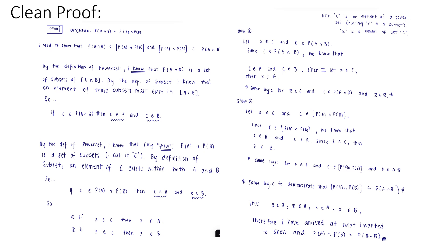I then do the same thing to show my second point, where I let Z exist within C and C exists within the power set of A intersect the power set of B. Since C exists within the power set of A intersect the power set of B, I know that C exists within A and C exists within B. Since Z exists within C, then Z also exists within B. I use that same logic for an element X existing within C and C existing within the power set of A intersect the power set of B, resulting in X also existing within A. I apply that same logic to demonstrate the reverse case where the power set of A intersect the power set of B is a subset of the power set of A intersect B. Therefore, I have shown that Z exists within B, Z exists within A, X exists within A, and X exists within B. Thus, I have arrived at exactly what I wanted to show and demonstrated that the power set of A intersect the power set of B equals the power set of A intersect B.